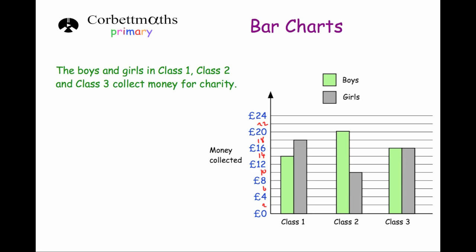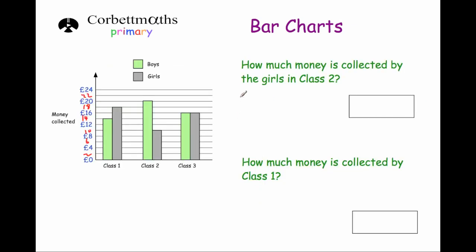So let's look at the questions. The first question says: how much money is collected by the girls in class 2? If we go to class 2 — the girls are the grey bar — we go up and across and we can see that the girls collected £10 in class 2.